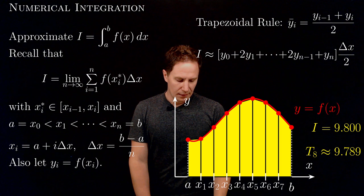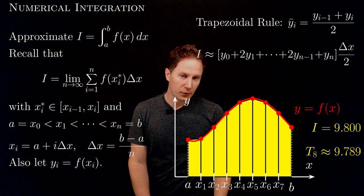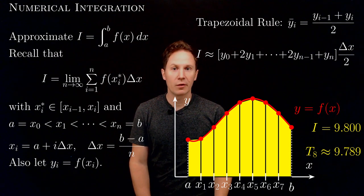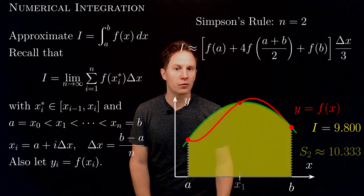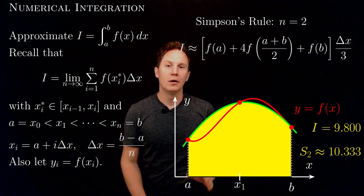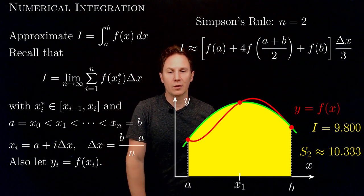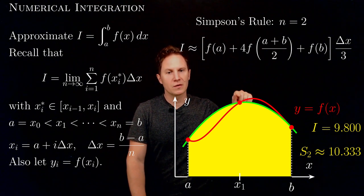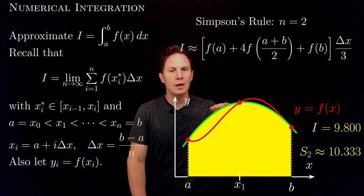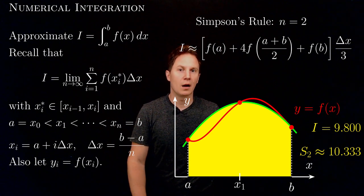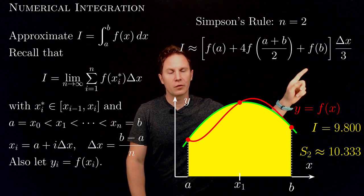Instead of rectangles or trapezoids, the next step is to use quadratic functions — parabolas — to approximate, and this gives rise to Simpson's rule, which requires an even number of subintervals. Demonstrating with two subintervals, we have three points on the graph of the function above each of the subdivision points. To these three points we fit a unique parabolic arc, and the area under it can be computed using integrals, giving this expression.